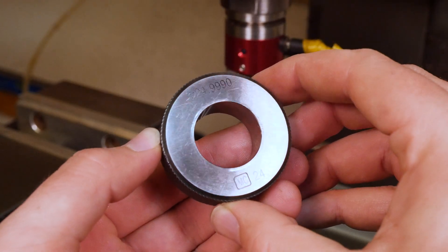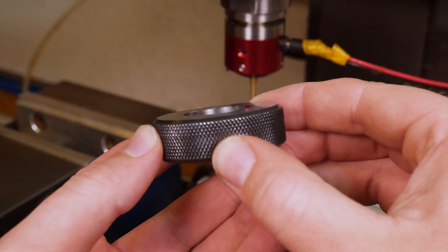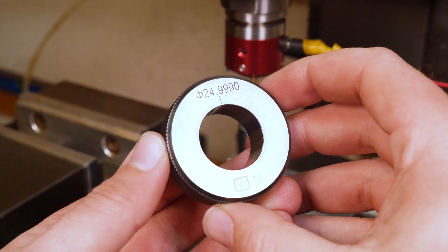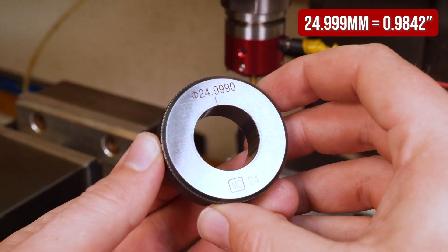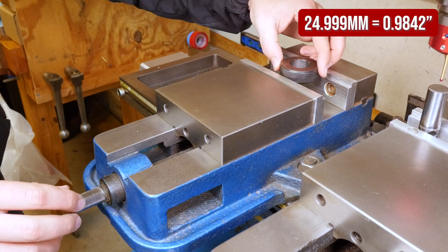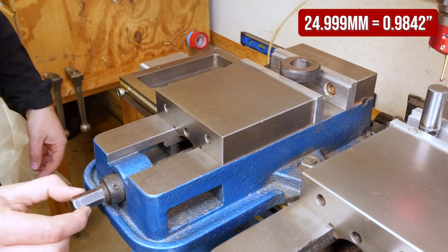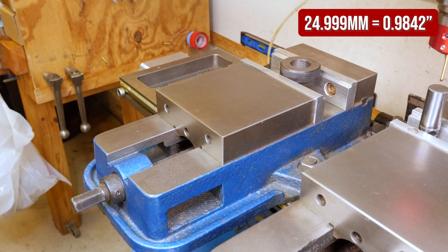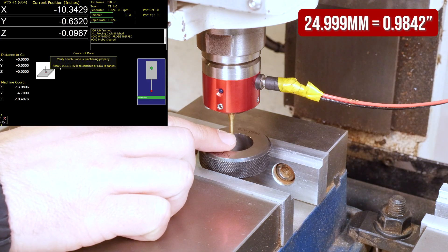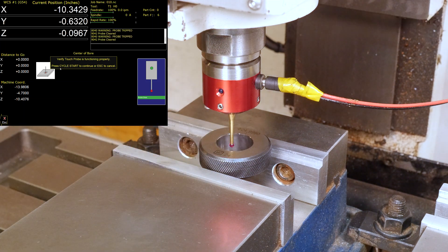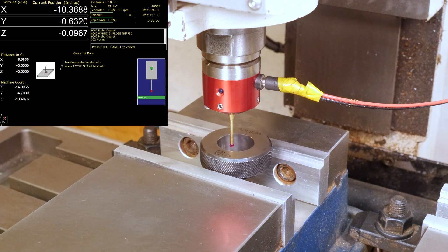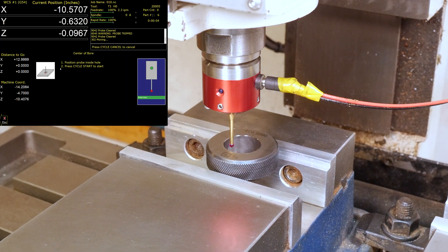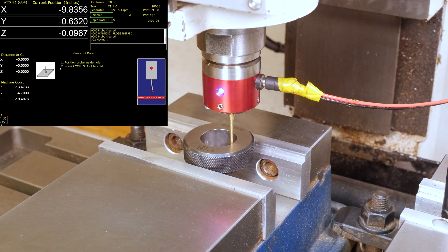This is the ring gauge that comes with the KP1 probe if you choose to order it. You can see that mine happens to measure 24.9990 millimeters which is 0.9842 inches and I'm going to hold it in this vise squeezing it very very lightly just barely finger tight. You don't want to clamp down on it too hard you don't want to turn it oval because we are going to use it to calibrate our probe.